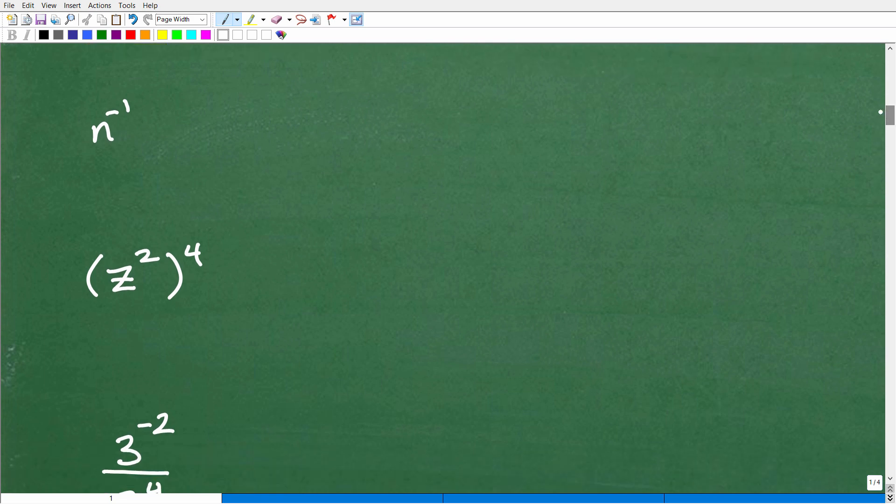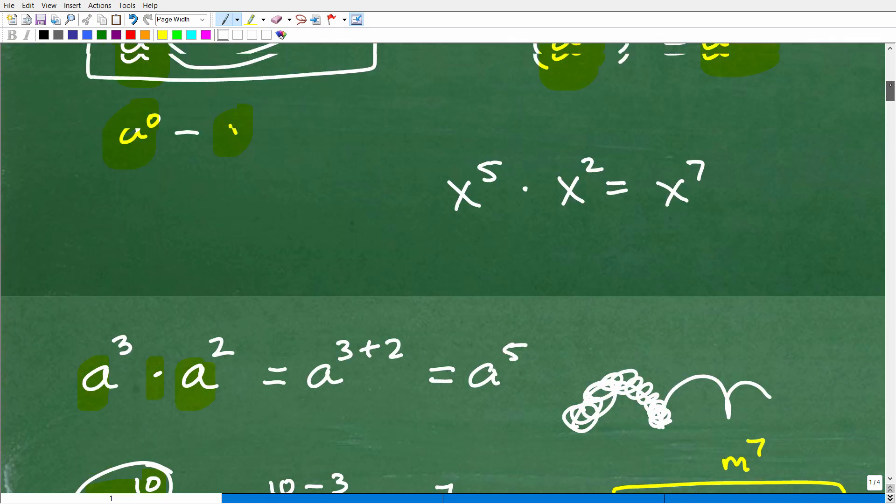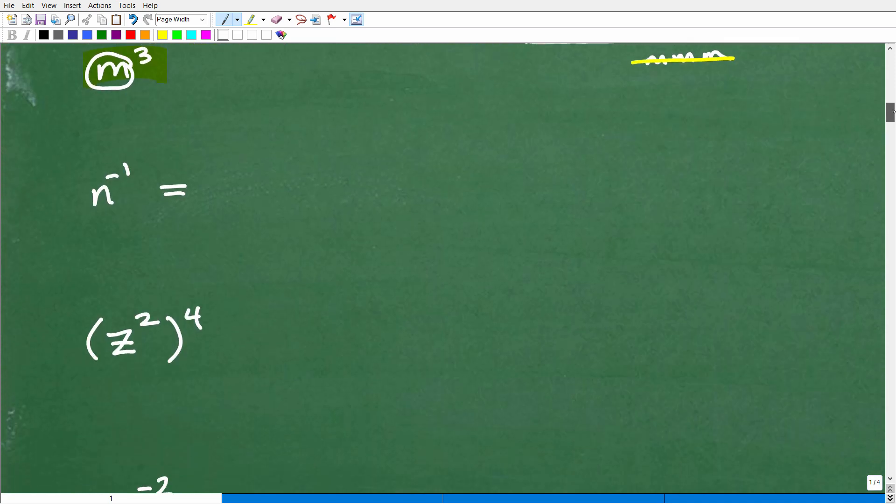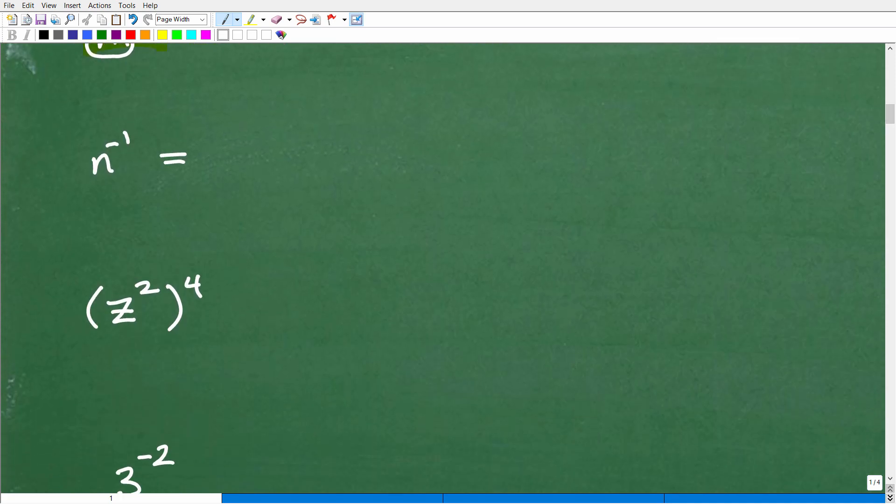And here I have n to the negative 1. So what power or what rule is going to apply? It's going to be this rule right here. a to the negative n. That's 1 over a to the n. So whatever this is, we basically put this down in denominator, and that sign goes from negative to positive. Now, this rule deserves its own video, and I have made a full video on this particular rule working with negative exponents. So here I can drop this down. n to the negative 1, that is 1 over n, or n to the first.